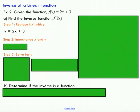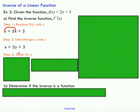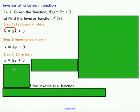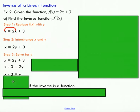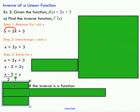Step two is to interchange x and y — I'm literally going to switch my x and y. Next, I'm going to isolate y using a little bit of algebra: I'll bring the three over to the other side, then divide by two to get y by itself. So I've brought my three over, divided both sides by two, and solved for y.